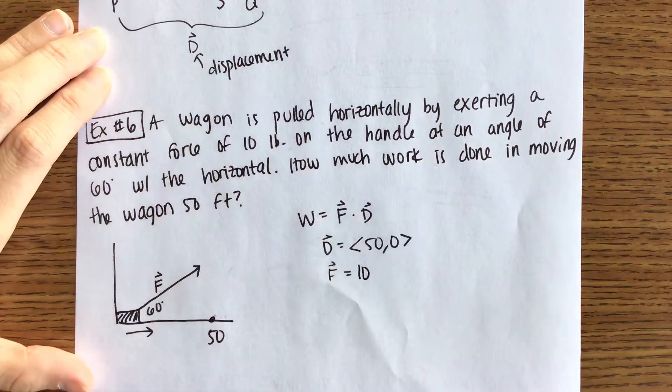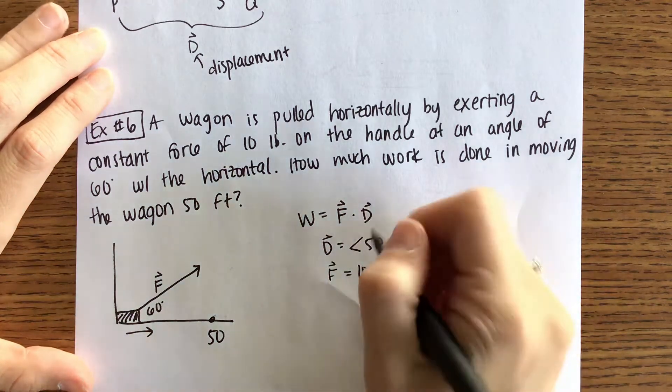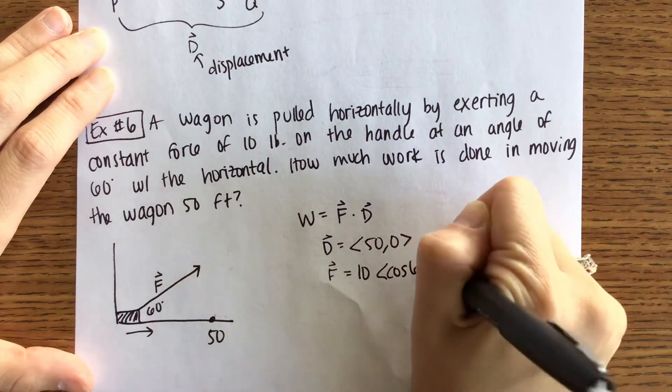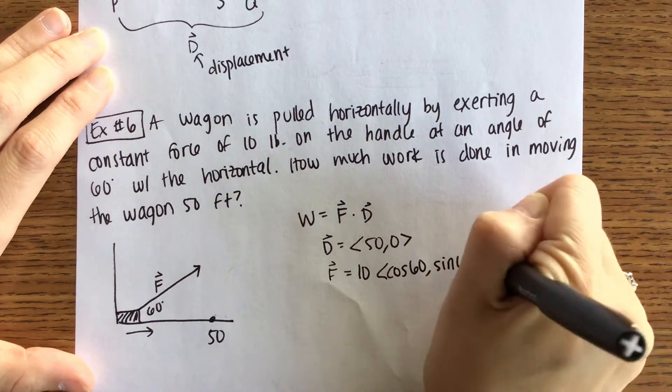The magnitude is 10. That constant force of 10. The direction is going to be cosine of 60 comma sine of 60. Because of that 60 degree angle.